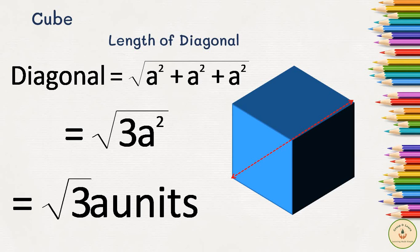So remember, when we calculate volume of any object, we use cubic units. When we calculate area, we use square units. And when the length is calculated, we will only use units.